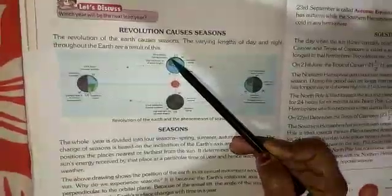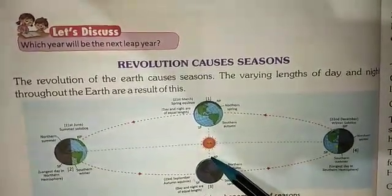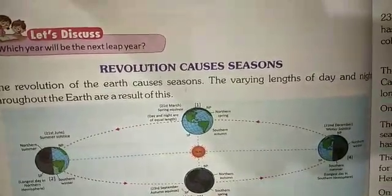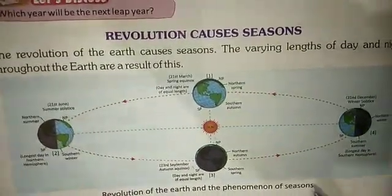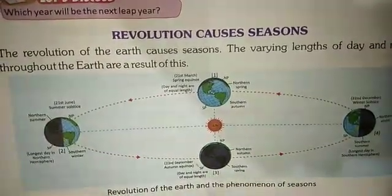Equinox: on 21st March and 23rd September, the sun shines vertically overhead on the equator. The day and night are of equal duration throughout the world. These two days are called equinoxes, meaning equal night. 21st March is called the spring or vernal equinox — the northern hemisphere has spring while the southern hemisphere has autumn. On 23rd September, called the autumn equinox, the northern hemisphere has autumn while the southern hemisphere has spring. It is neither very hot nor very cold in any hemisphere.